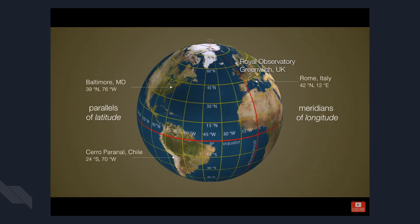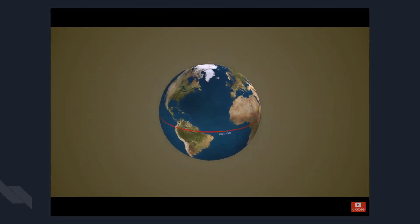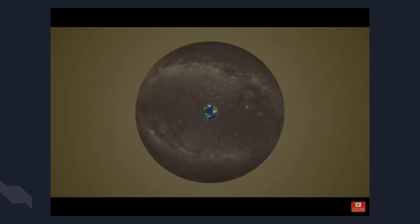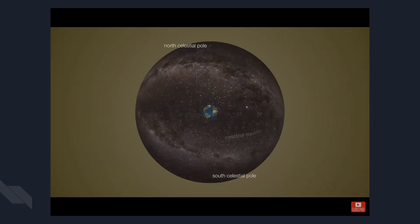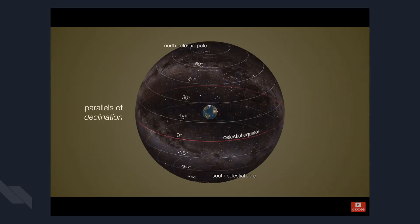Now, that is how we define every location on Earth. And we're going to use an analogous system to define every location in the heavens. So let's bring our Earth inside of the celestial sphere. And we'll once again extend our north and south poles to form the north and south celestial poles. We'll extend the equator to form the celestial equator. And just as we did before with parallels of latitude, we can now draw parallel lines to the celestial equator, only we refer to these as parallels of declination.